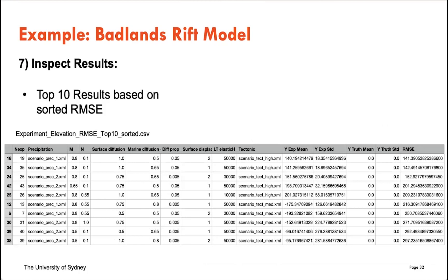The first part of the results file is the top 10 experiments — in this case looking at how well the simulations are modeling elevation. This gives you the top 10 and shows the root mean square error (RMSE), which is in the units of whatever thing you're trying to simulate, making it a nice metric for comparison. You can see the best experiment along with the different parameter values for each — the precipitation scenario, tectonic scenario, and all other values that were optimal.